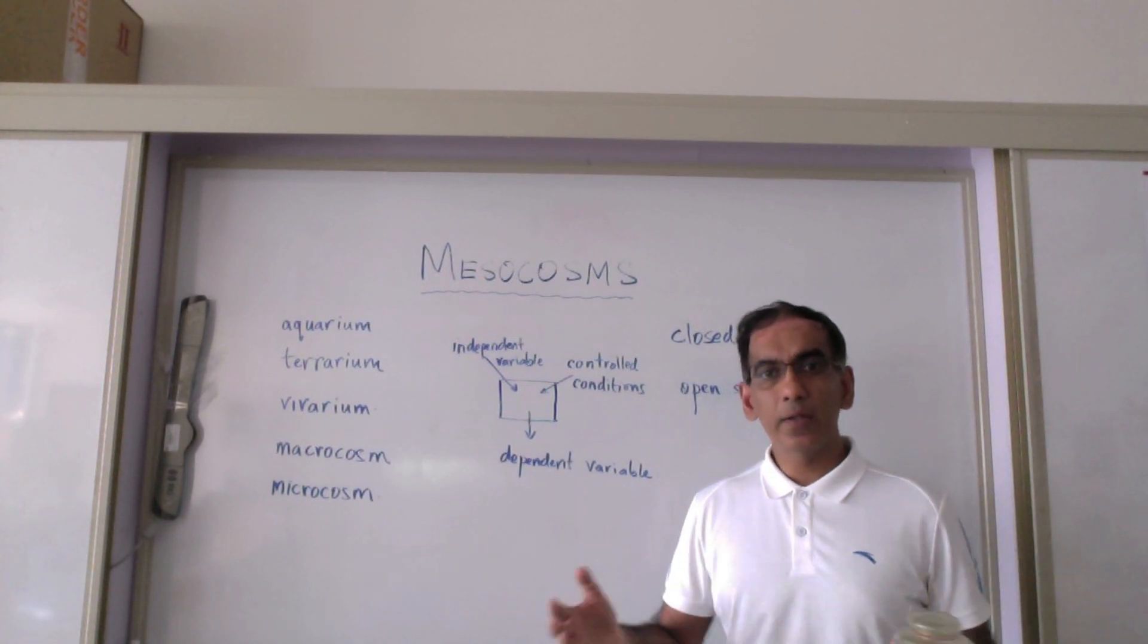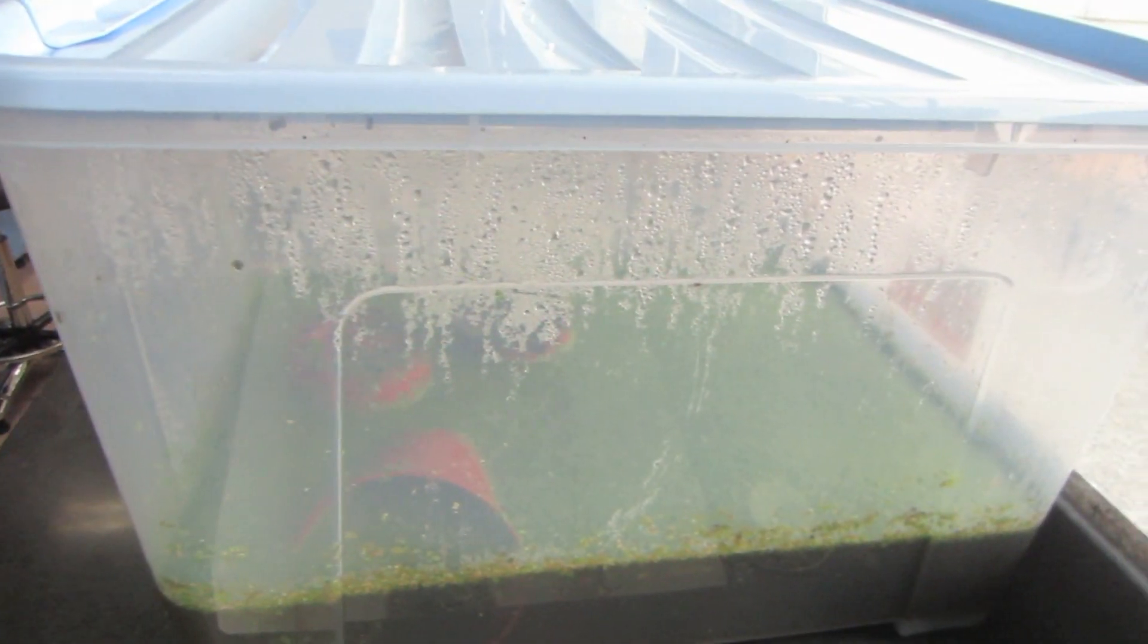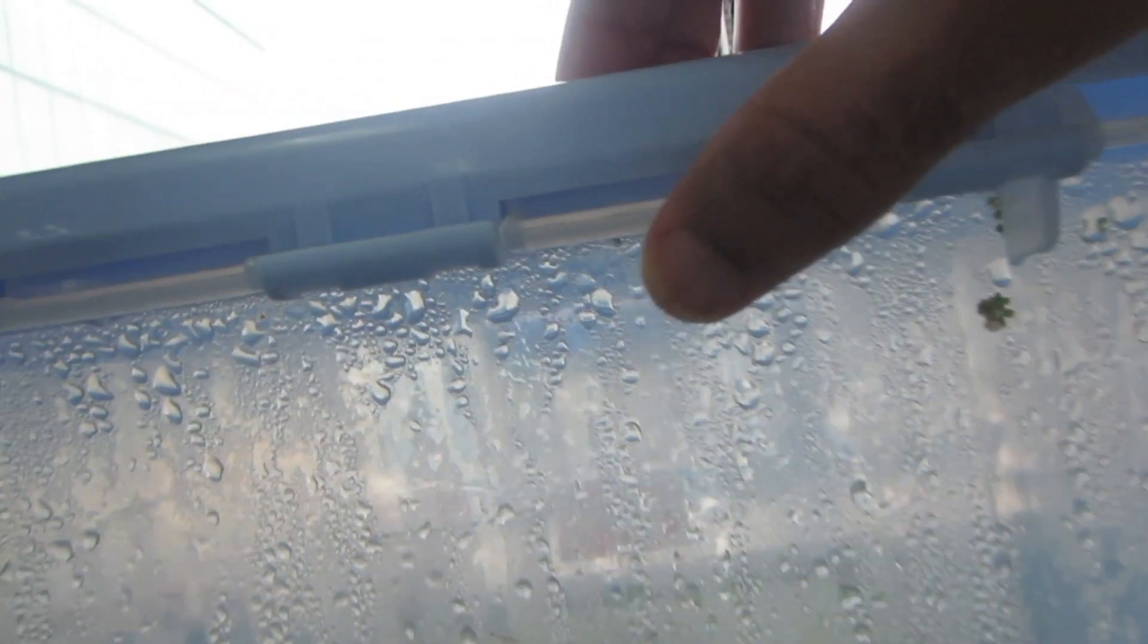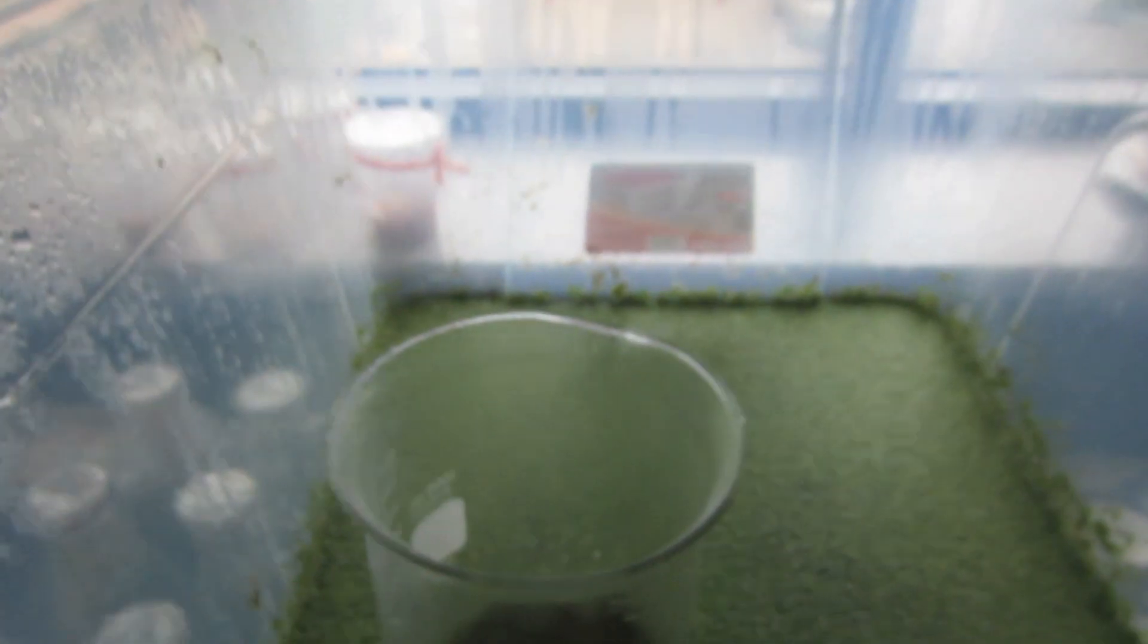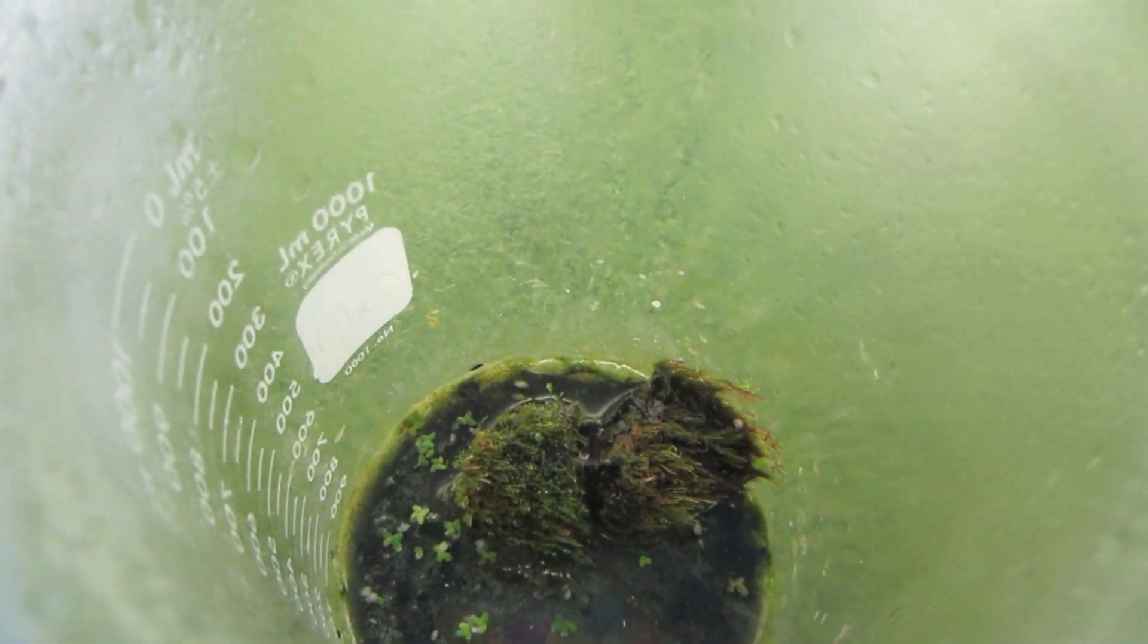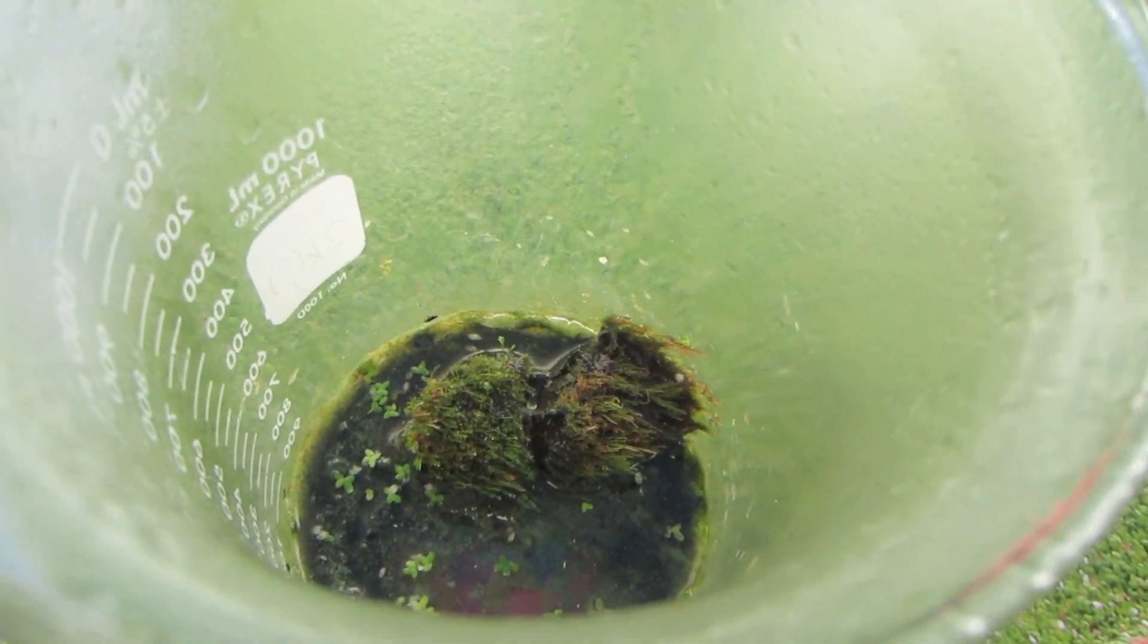Let's have a look now at some other mesocosms. You can clearly see the high levels of moisture that are trapped within the system, providing ideal conditions for plants like algae and mosses to thrive.